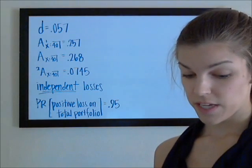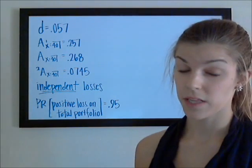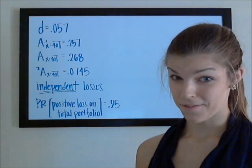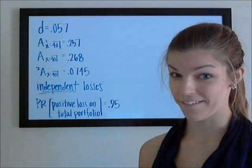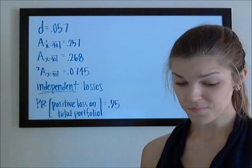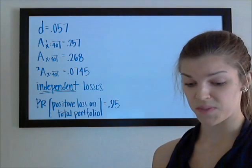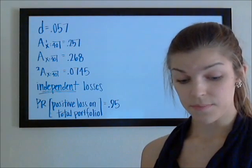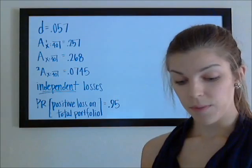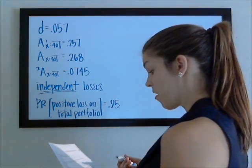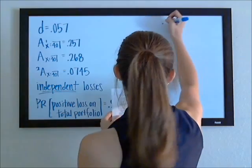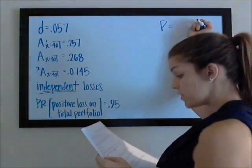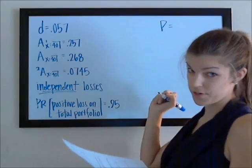When they use the term 'benefit premium,' that's supposed to imply that they're calculated according to the equivalence principle. That was something I missed for a really long time and ended up being really confused about. So benefit premium means equivalence principle, unless stated otherwise. The premium mistakenly charged — I'm going to call that P — is the benefit premium for the fully discrete 40-year term insurance.